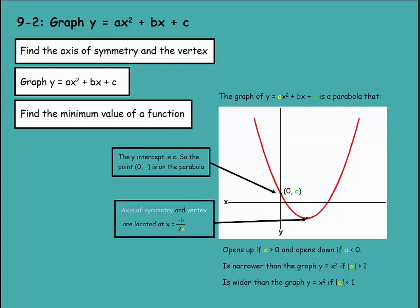Looking at the graph of y equals ax squared plus bx plus c, it's a parabola that opens up if a is greater than zero, and opens down if a is less than zero. It's narrower than the parent graph y equals x squared if the absolute value of a is greater than one, and it's a wider graph than the parent graph if a is less than one — for example, if a was one-half, it would open up wider.